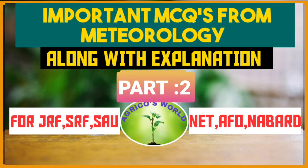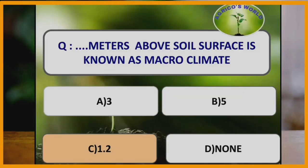Hello everyone, welcome to our channel Agricose World. In this video we are going to discuss some of the important questions related to meteorology which are asked in most of the competitive exams. Our first question: how many meters above the soil surface is known as macroclimate? Above 1.2 meters of the soil surface is known as macroclimate, whereas below 1.2 meters it is known as microclimate.